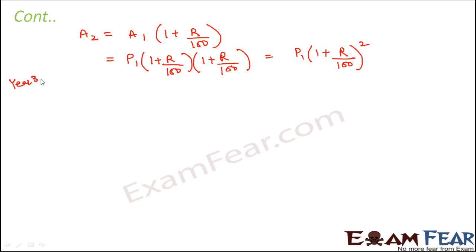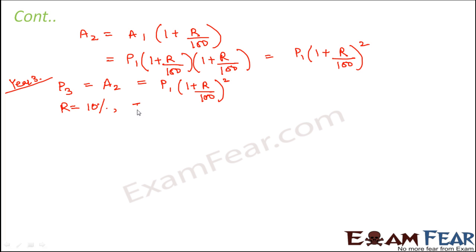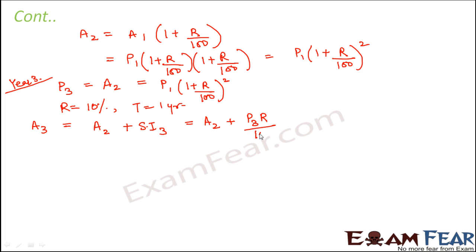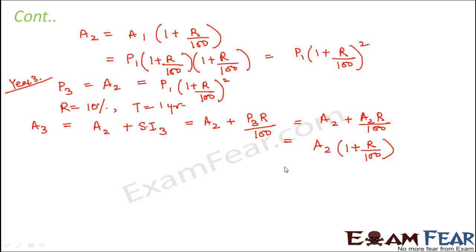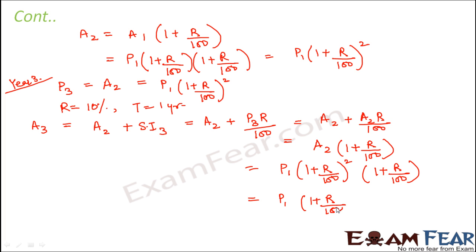Now let us do a similar calculation for year 3. The principal for year 3 is A₂ = P₁ × (1 + R/100)². Rate of interest and time period remain the same. The amount at the end of year 3 is A₃ = A₂ + P₃ × R × T / 100 = A₂ + A₂ × R/100 = A₂ × (1 + R/100). Substituting A₂, this gives A₃ = P₁ × (1 + R/100)² × (1 + R/100) = P₁ × (1 + R/100)³.